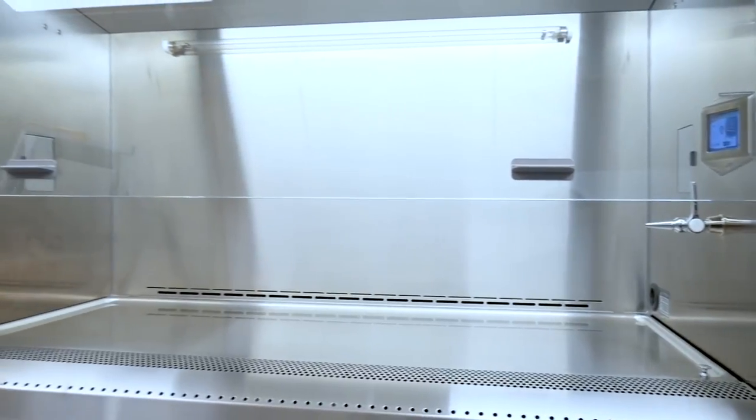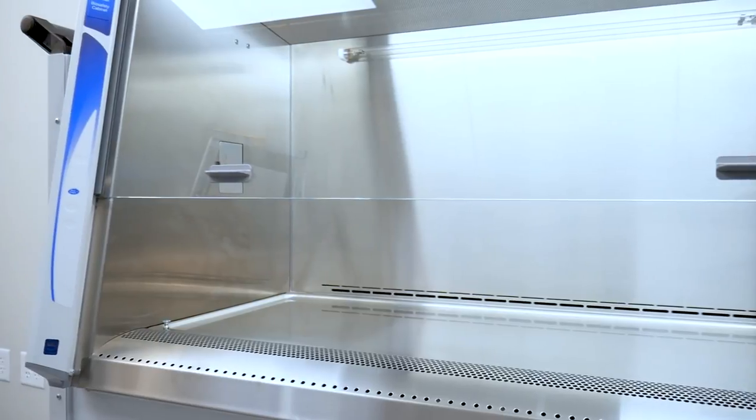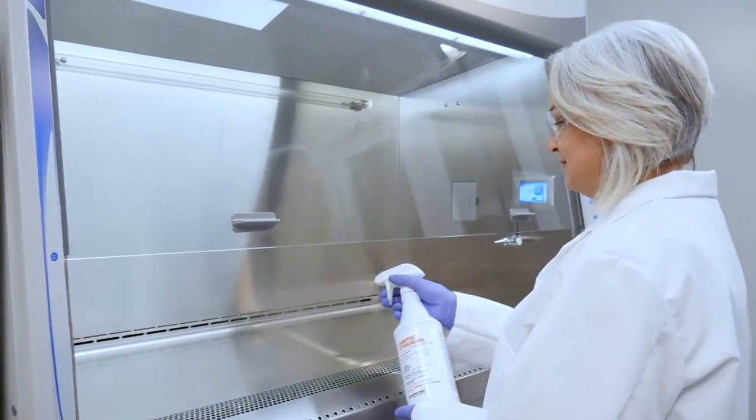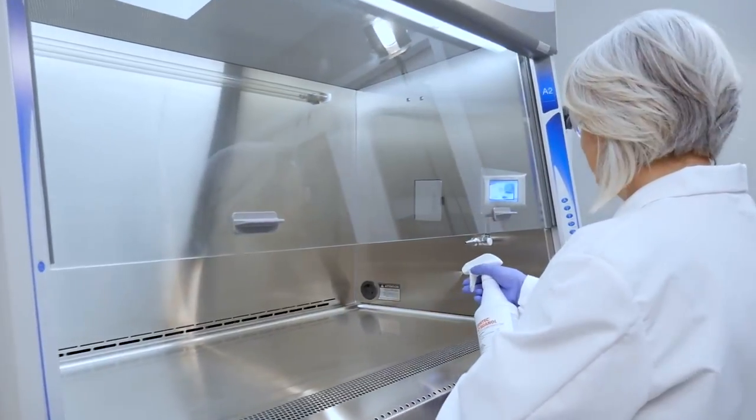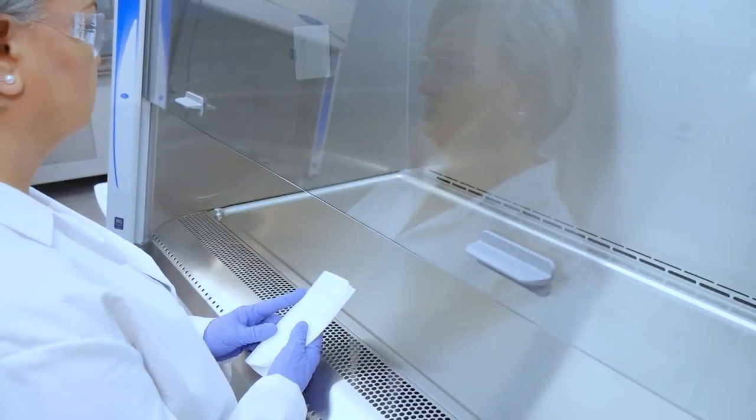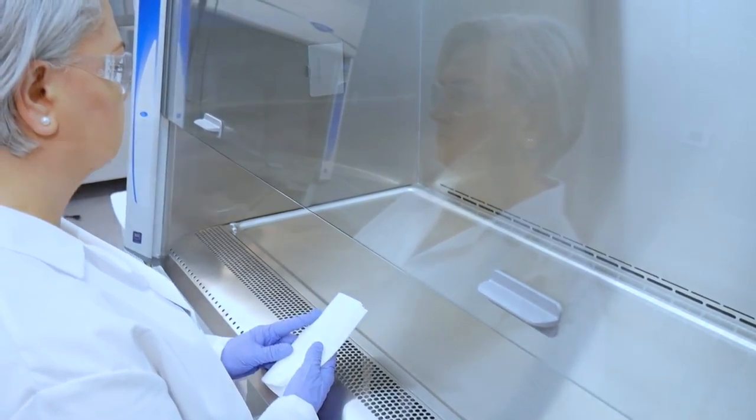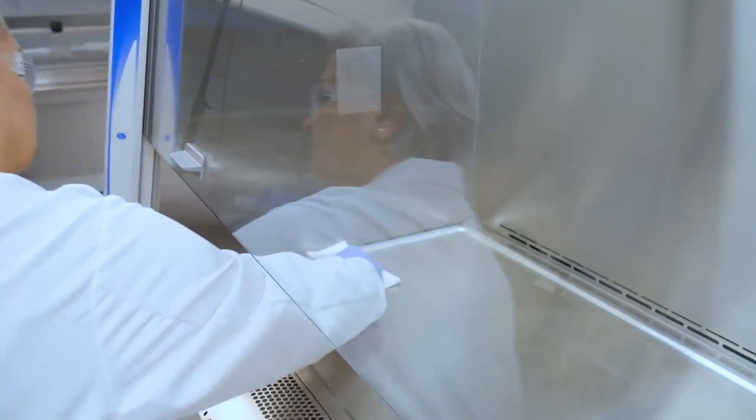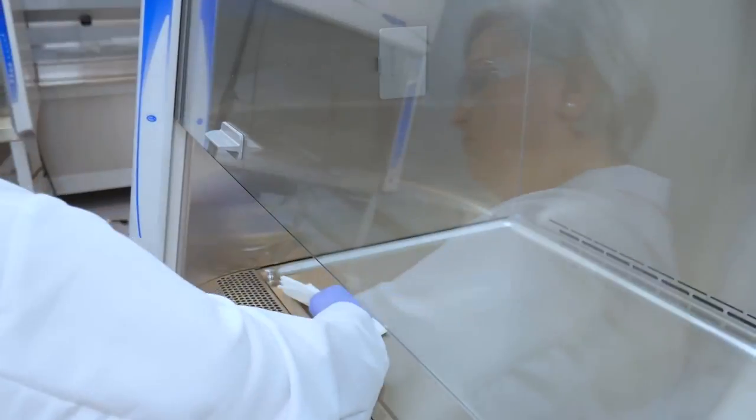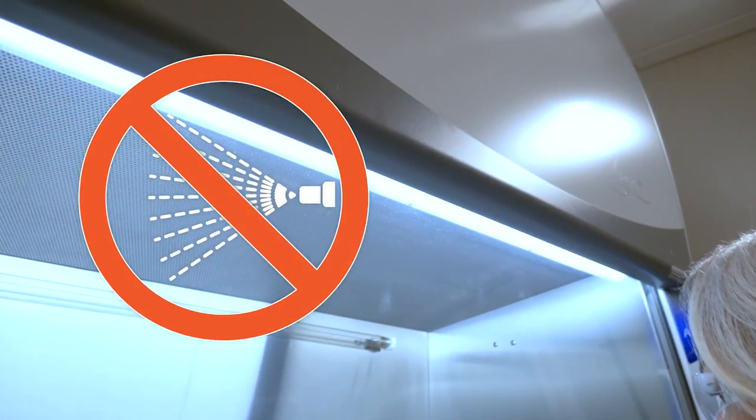Continue by disinfecting the interior of the BSC. 70% IPA is commonly used. However, select a disinfectant capable of decontaminating the materials you're using within your BSC. When applying disinfectant to the BSC, be sure to allow for the manufacturer's recommended contact time before wiping. As you wipe down the cabinet, work from the top to the bottom. Be careful not to spray the supply HEPA filter as damage may occur requiring replacement.